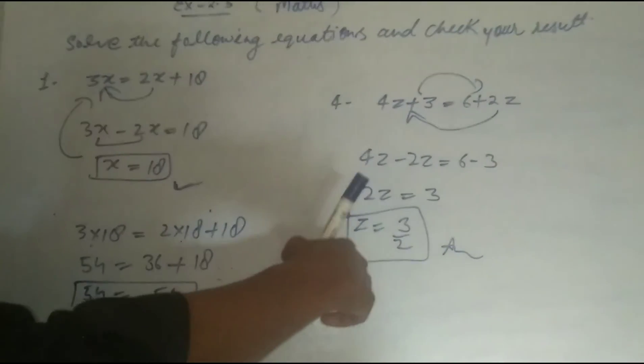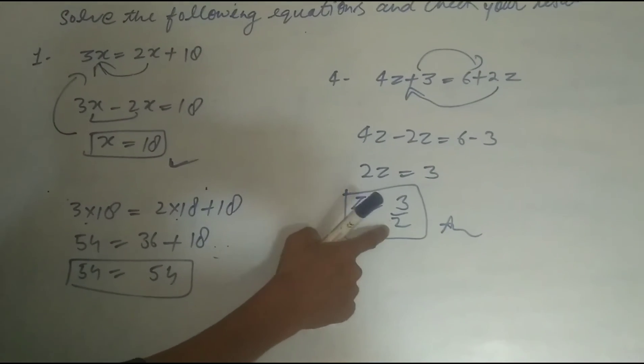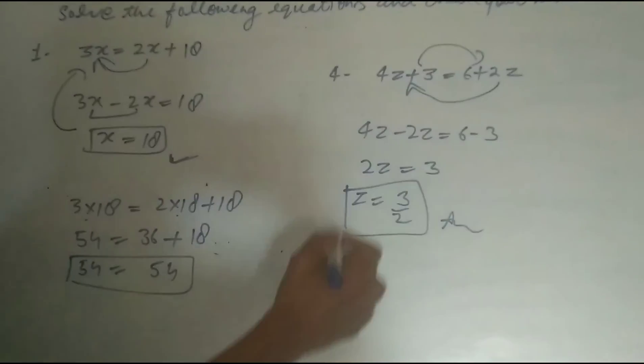Now we verify if our result is right or wrong. We put the value of z = 3/2 in LHS and RHS, in both sides.